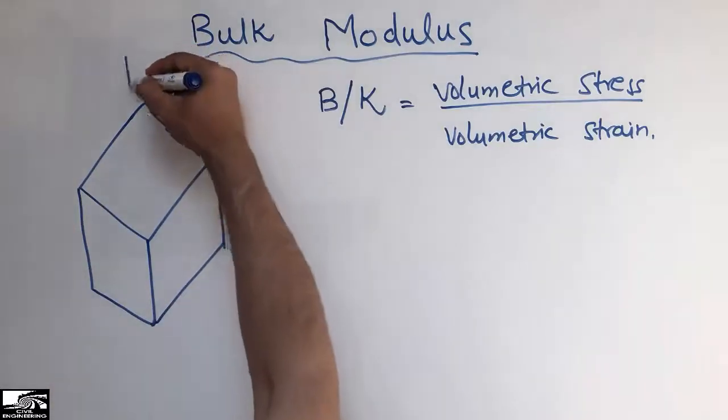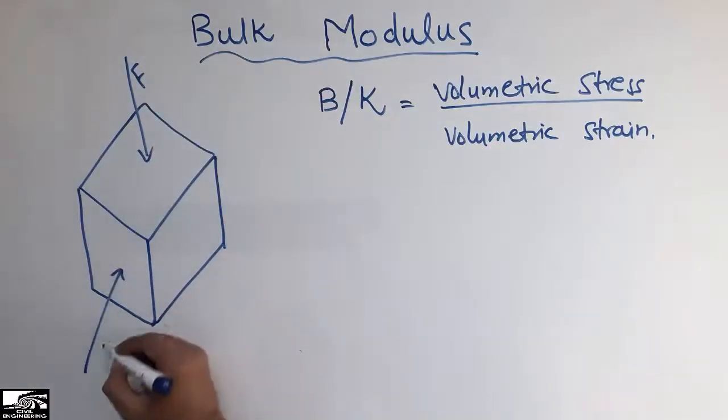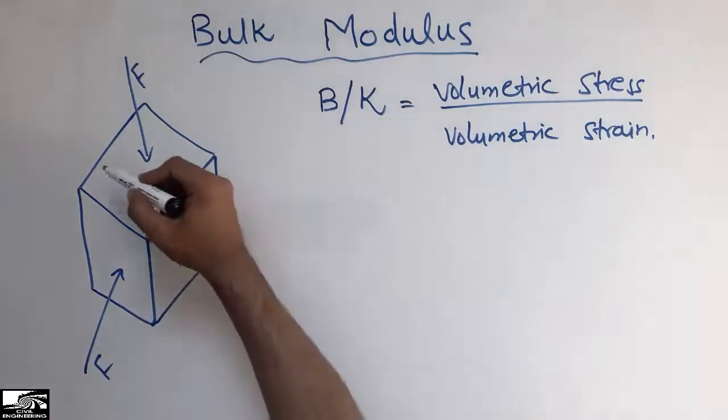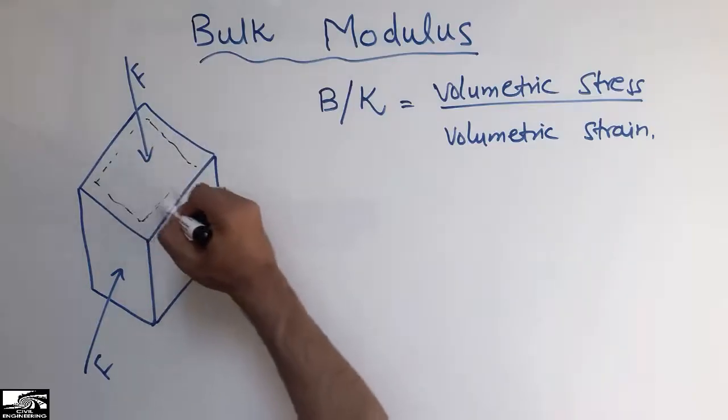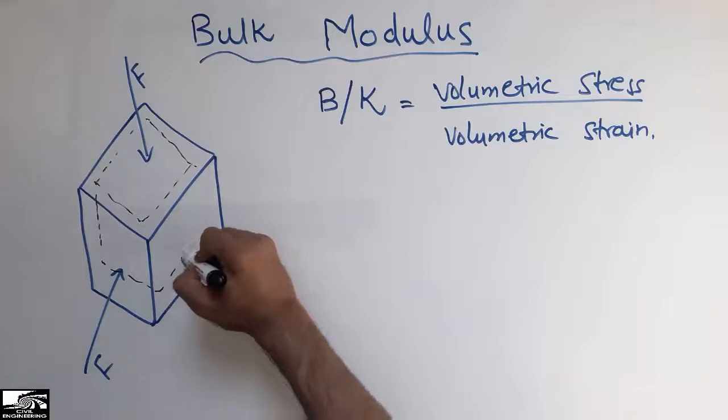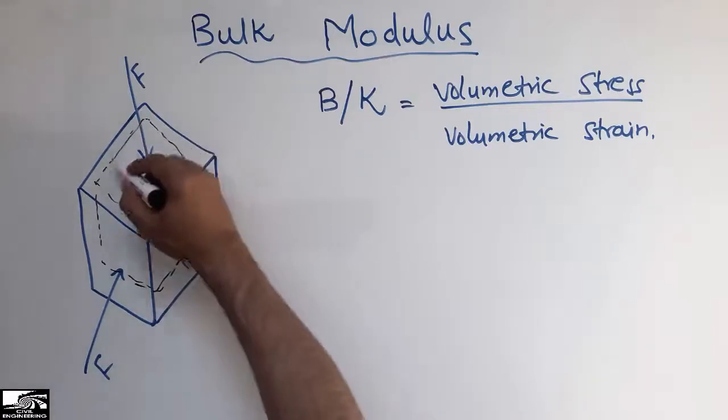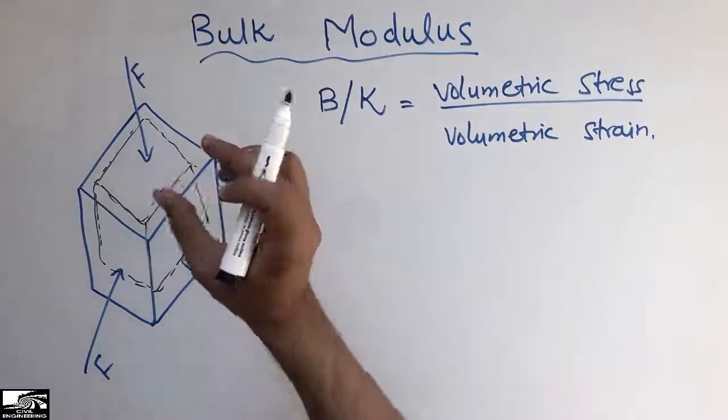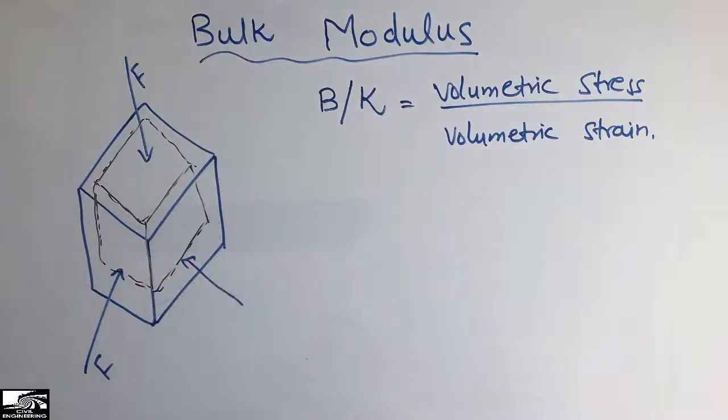Let's suppose the load is acting from different directions on this cube. Due to the load acting on this cube in a compressive way, this object will tend to deform in this position. It will be squeezed down and this will be the deformed shape of this object. There is a compressive strain in this object because of the compressive load.